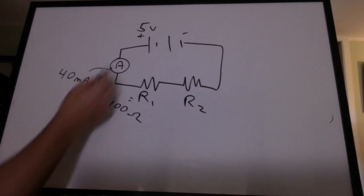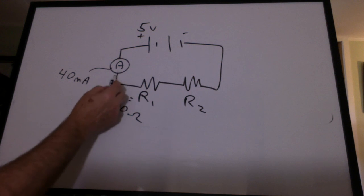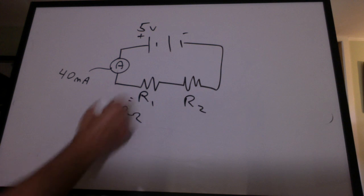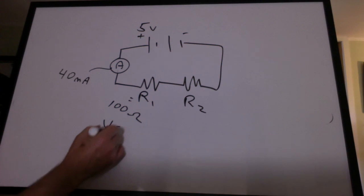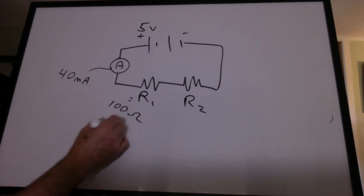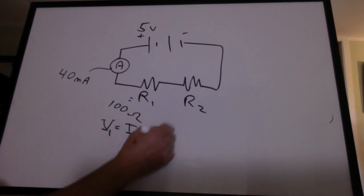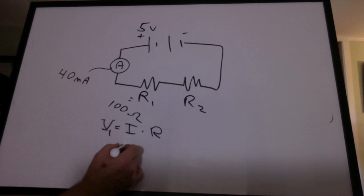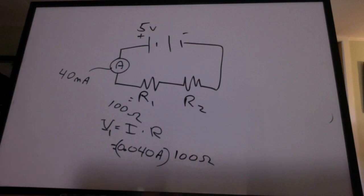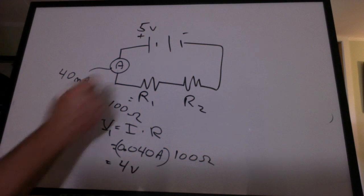Current is charge per time. If a million electrons flow here, then a million got to flow through here. There's no other place for them to go. So I'm going to ask you, what is the voltage drop across the first resistor? Well, V across a resistor is equal to I times R. We know the current is 0.040 amps. And we know that resistance is 100 ohms. So that means we know we have a four volt drop across that resistor.